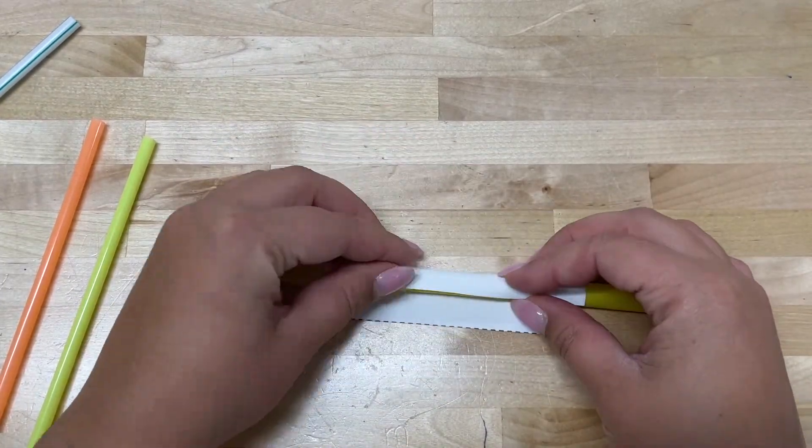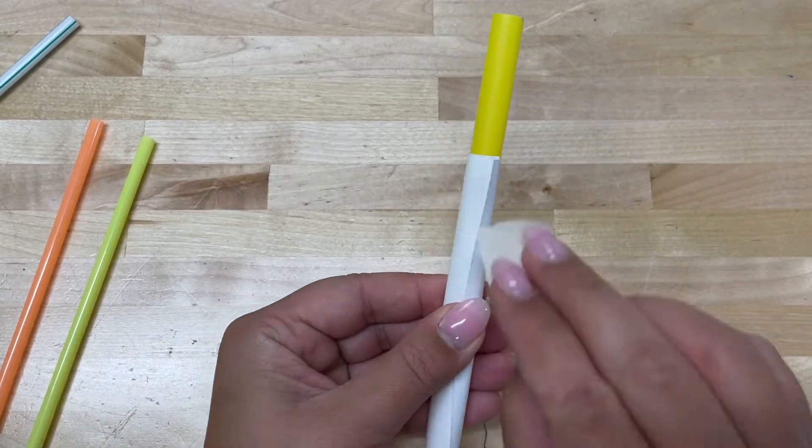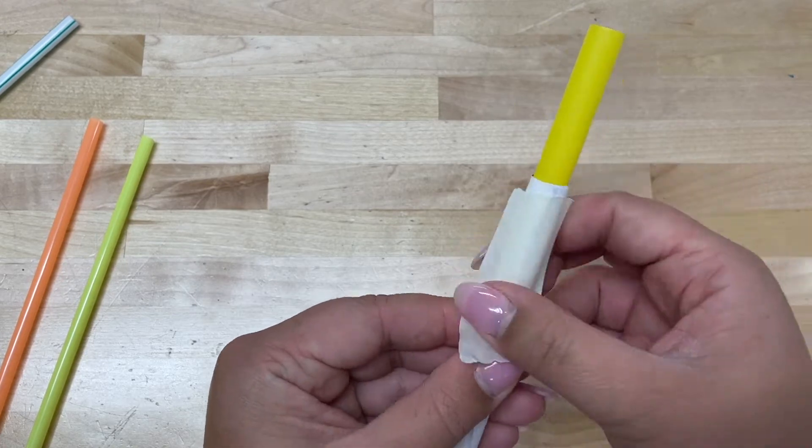Roll one rectangle around a straw to make a tube. Tape the tube. Make sure it's not too tight and can still slide off the straw.